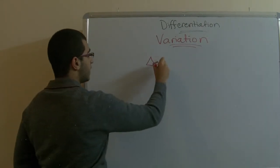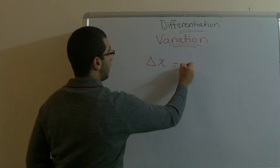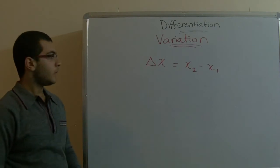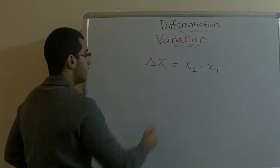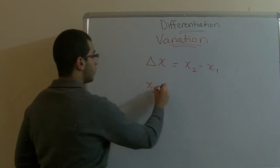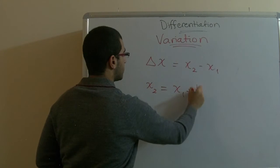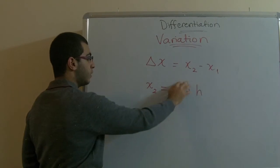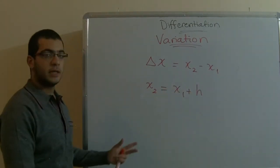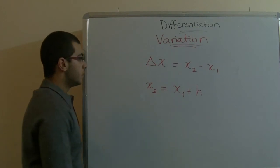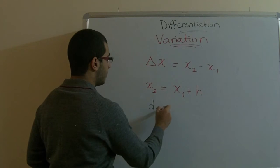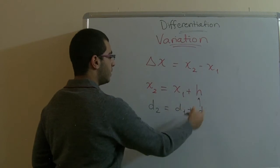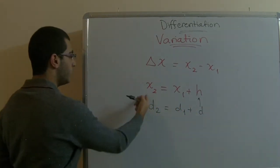As we just mentioned, delta x would equal x2 negative x1. Now, x2 equals x1 plus h. This is the quantity which is added to x1 to give this x2. It's like two distances and the difference between them is delta d, so those two are similar. Here we change the d with an h, d1 with x1, and d2 with x2.